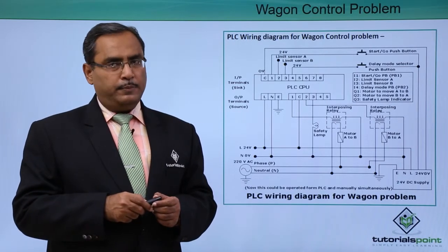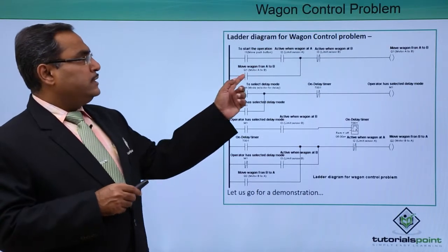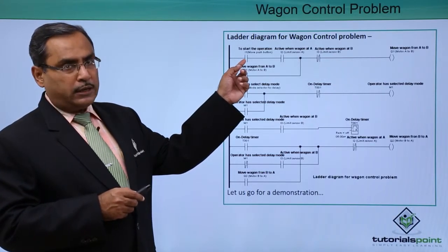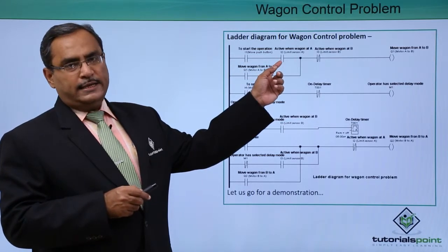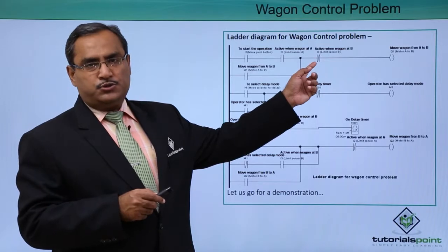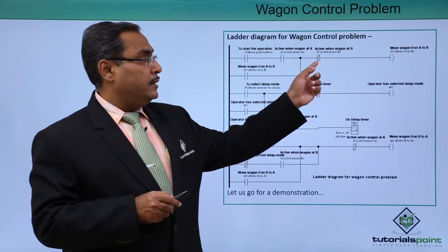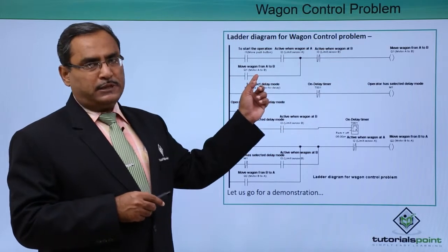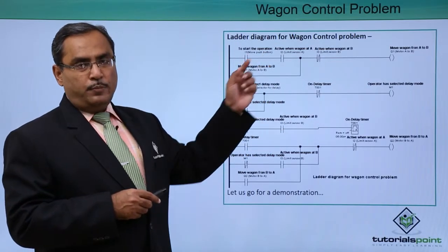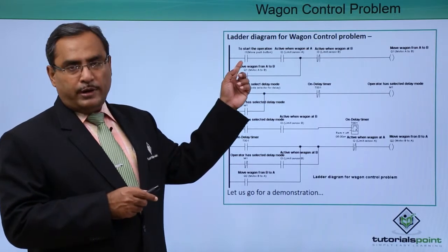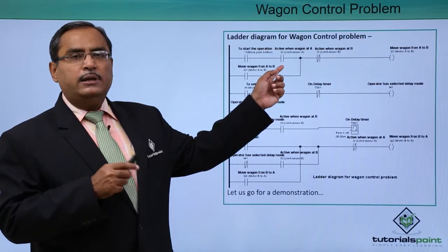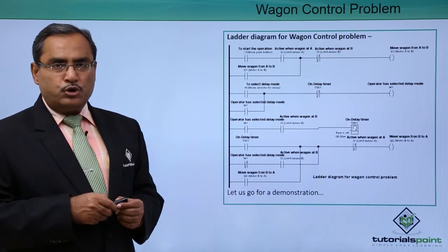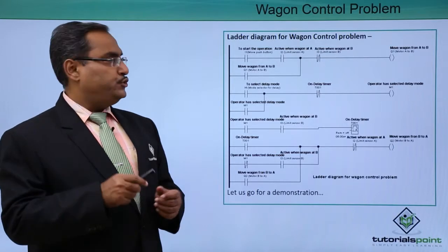This is the ladder diagram for the wagon control problem. When the start push button is pressed and the wagon is at sensor A, until it reaches sensor B (limit B), the motor carrying the wagon from A to B will be on. A parallel latch path bypasses the push button contact, because when the push button is released the wagon is between stations and limit sensor A can no longer sense it. So the wagon remains in motion until it reaches station B.